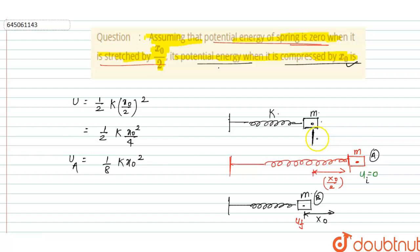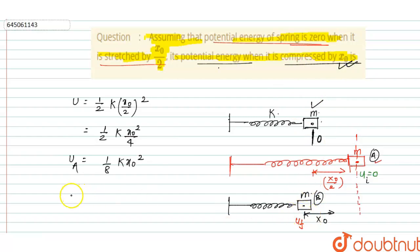When the mean position is at this position, let us consider this is point O. But in this question, the potential energy is given as 0 at position A. So we will consider this as the mean position. The potential energy when compressed by x₀ — potential energy at position B, that means u_f — is equal to (1/2) · k · x₀².